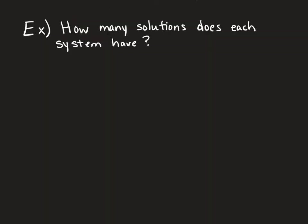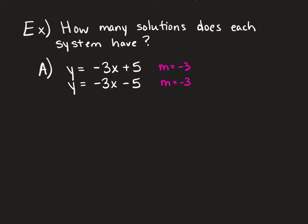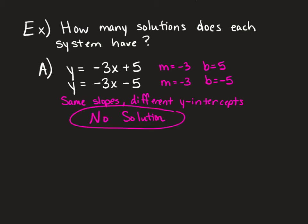In our example, how many solutions does each system have? We're just going to use inspection to find the number of solutions. Notice that both equations have the same slope of negative 3, but the y-intercepts are different: positive 5 for the first and negative 5 for the second. Same slopes, different y-intercepts means these would be parallel lines, so they would never have any points in common — they would never cross. Therefore, this system has no solution.